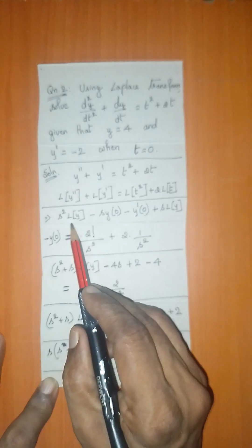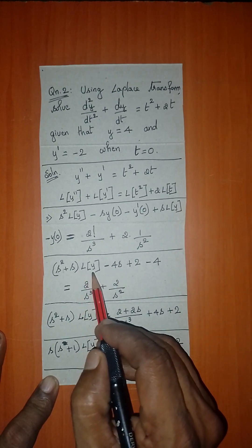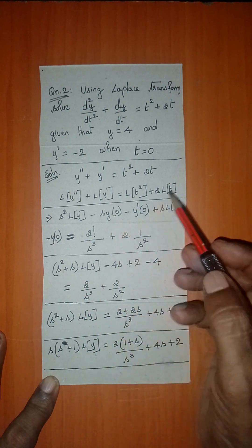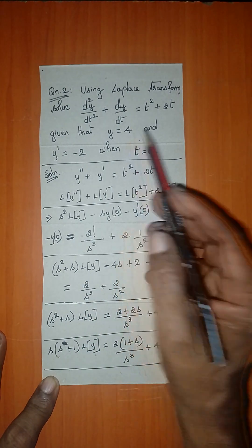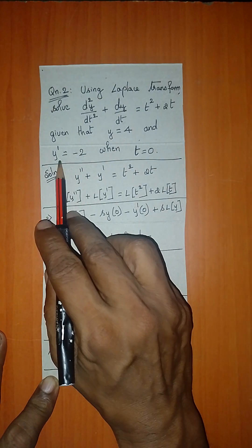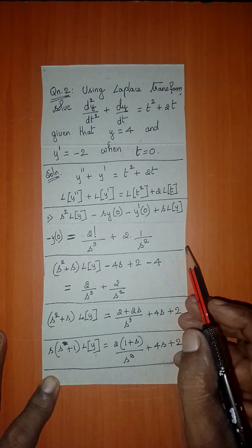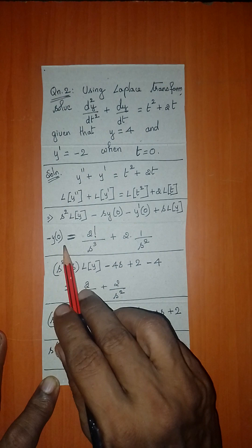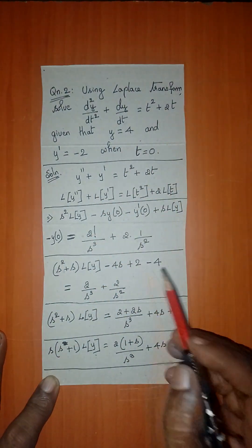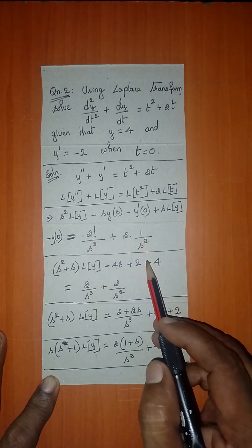We have s² · L{y} and s · L{y}, so L{y} is taken common, giving s² + s as the first term. Now y(0) = 4, so 4 into −s gives −4s. y'(0) = −2, so minus of minus becomes plus, giving +2. Then minus y(0) = −4. Right hand side: 2!/s³ = 2/s³ plus 2/s².